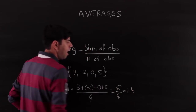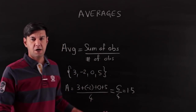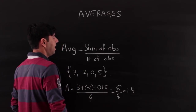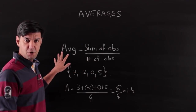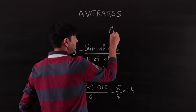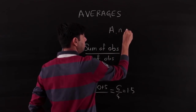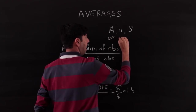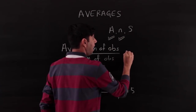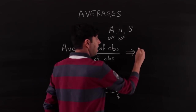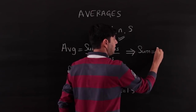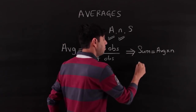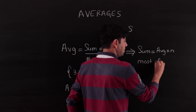The average is 6 by 4, that is 1.5. If we analyze questions, there are three terms involved: the average, the number of terms, and the sum. We are usually given the average and the number of terms, so it is a good idea to rewrite the formula as: sum of observations = average × number of observations. This formula is the most often used one.